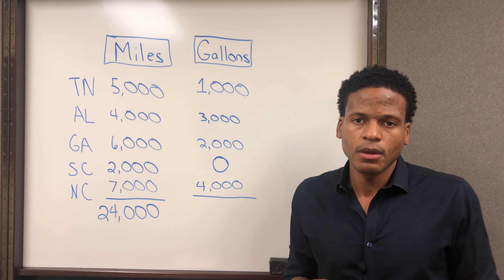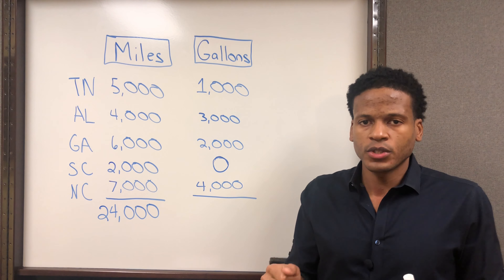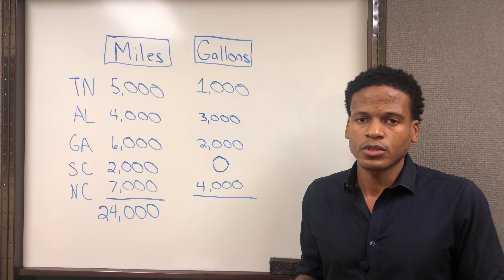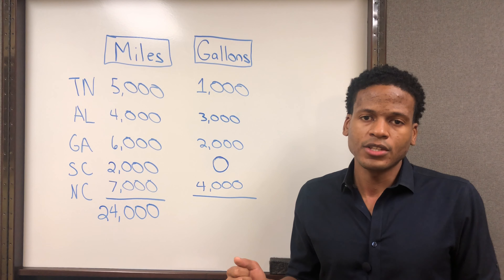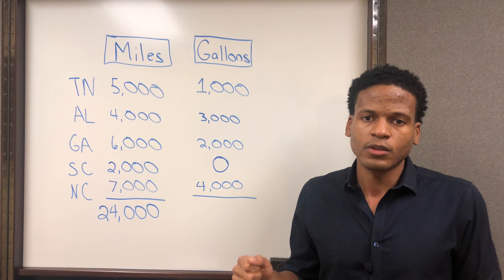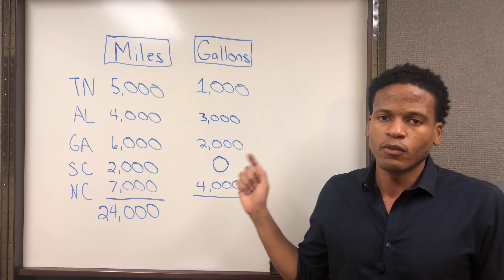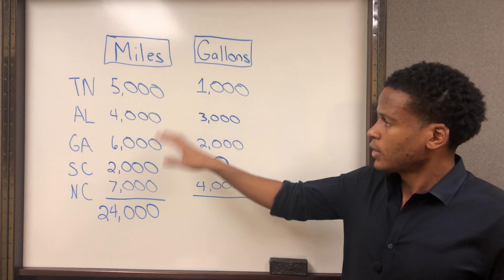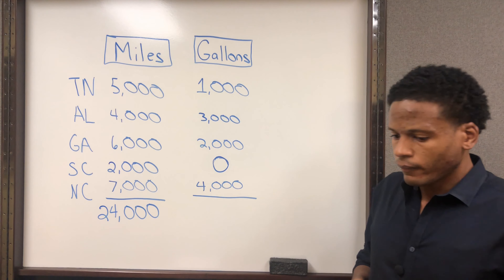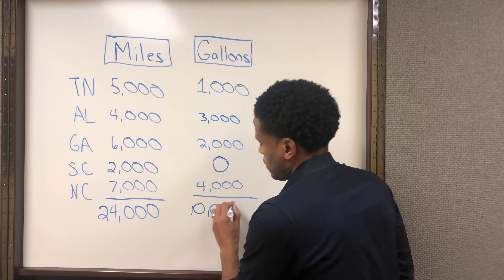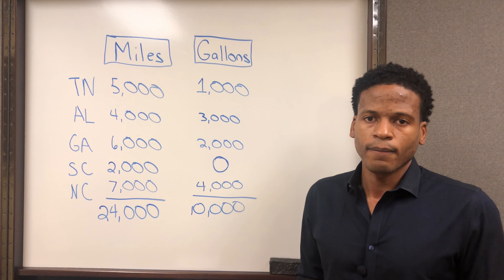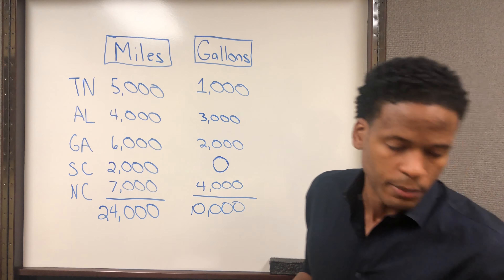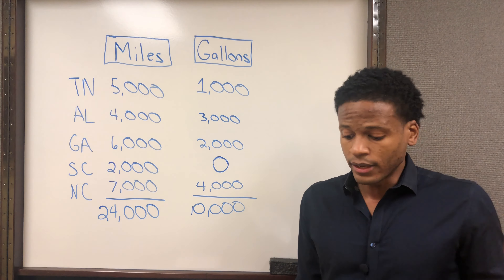One more thing: if you are using receipts, make sure you're using the actual receipt, not a prepaid receipt. Some people prepay for fuel, but the prepaid receipt doesn't have the gallons purchased. So if you buy fuel prepaid, once you're done filling up, go back to the cashier and get the finalized receipt, because that will have the gallons purchased — and you're going to need that for IFTA. Once you have the miles and gallons by state, go to your state's IFTA reporting process and enter that information.